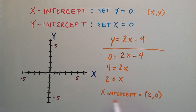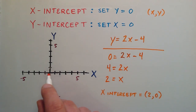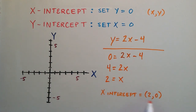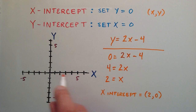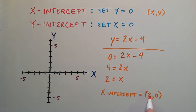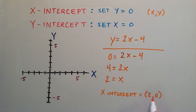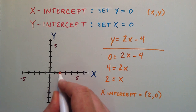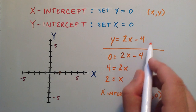Let's go ahead and plot this point. On the x axis, when y is equal to 0, that's the x axis itself. Our x component is equal to 2, so the point (2, 0) is right here. That is the x intercept of this line.